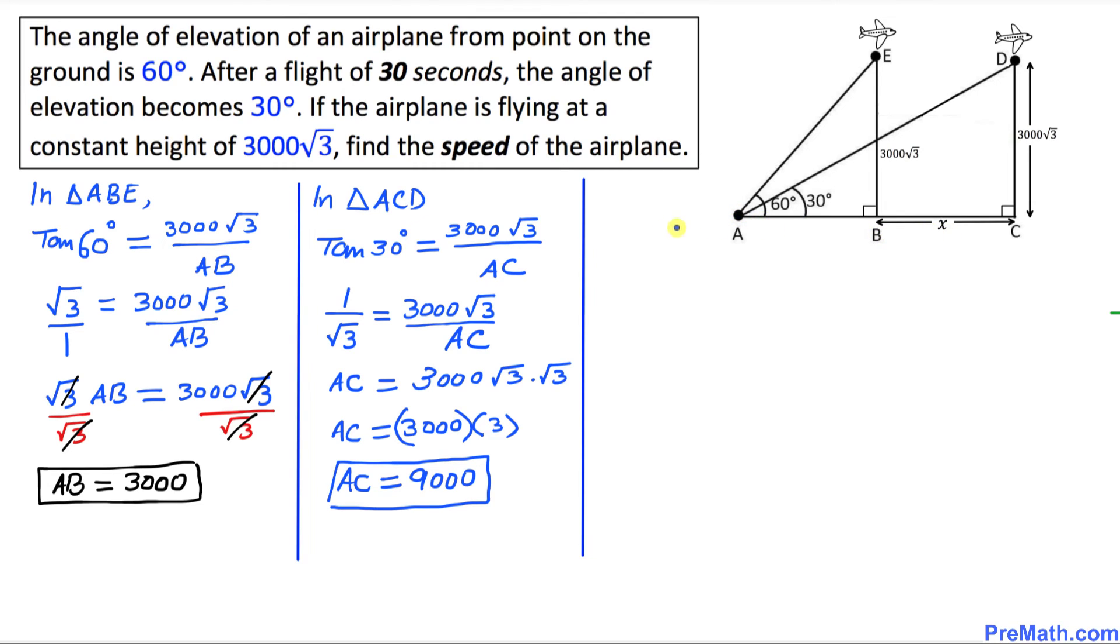In our next step, focus on this horizontal part. We know that AC, this whole big segment, equals AB plus BC. This whole thing equals AB plus BC. From our previous steps, AC is 9000, AB is 3000, plus BC which we call x. If we move this 3000 to the other side, we get x equal to 6000.